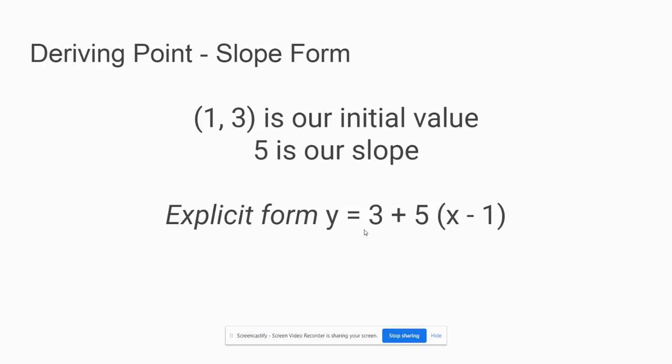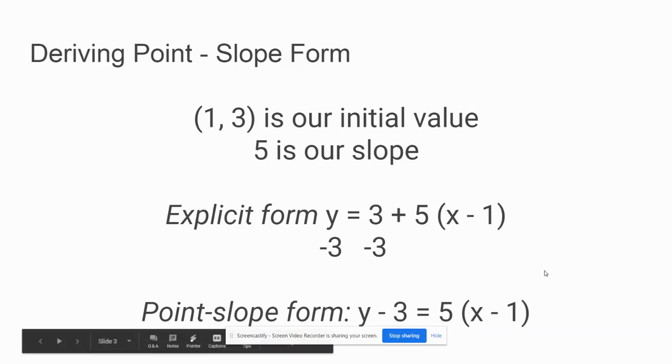The only output value that's not with y right now is this 3, so I'm going to subtract 3 from both sides. My point-slope form for our previous example would be y minus 3 equals 5 times x minus 1. Just a minor tweak of what we already know how to do from our arithmetic sequences.